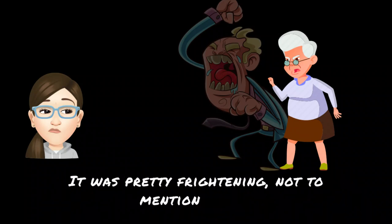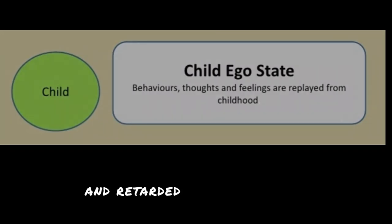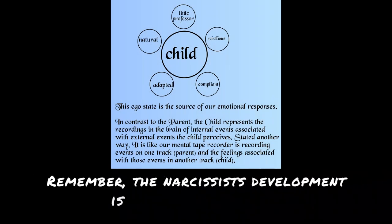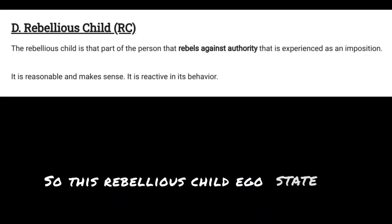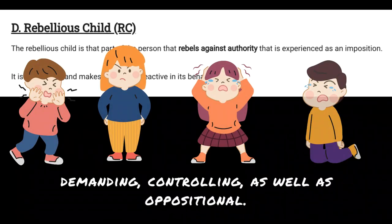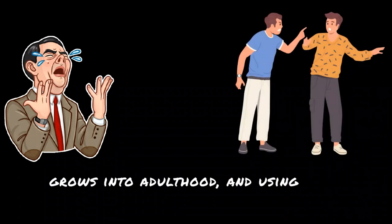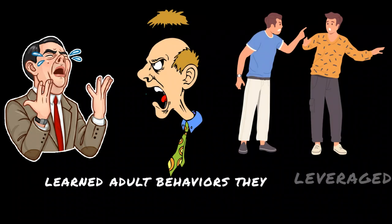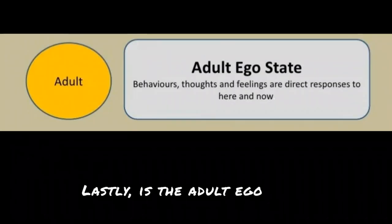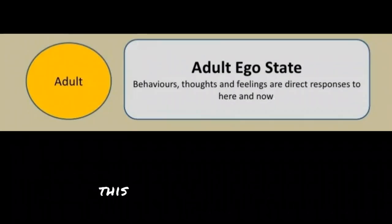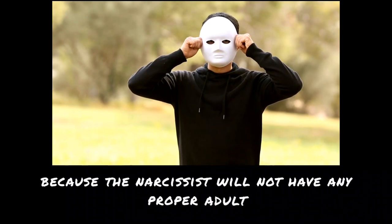Then there is the narcissist's petulant, entitled, and arrested child ego state. The narcissist's development is arrested anywhere from infancy to very early childhood. This rebellious child ego state will be demanding, controlling, and oppositional. This attitude evolves as the narcissist grows into adulthood and, using their size and learned adult behaviors, they leverage this power to effectively bully their targets. Lastly is the adult ego state — and you can probably guess what this is for the narcissist. If you guessed the false self, you'd be correct, because the narcissist will not have any proper adult state, only the fantasy they've created for themselves.